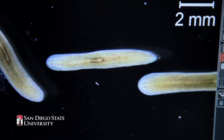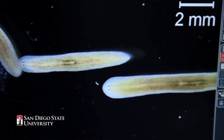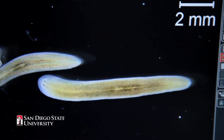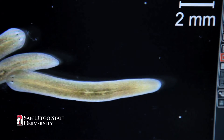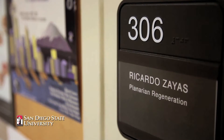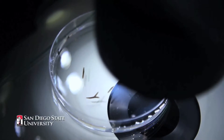Planarians are a type of flatworm, and they're non-parasitic and free living, and you can find them in many different places. The ones we study are freshwater, and they can range in size. The ones we study are very small — as big as a grain of rice.